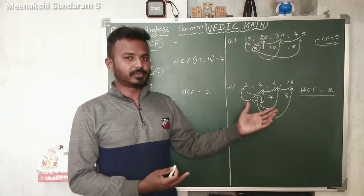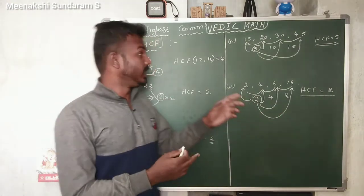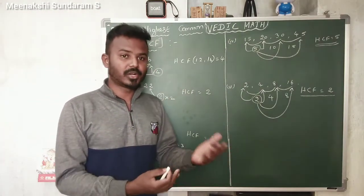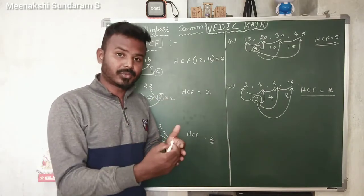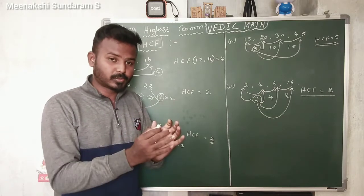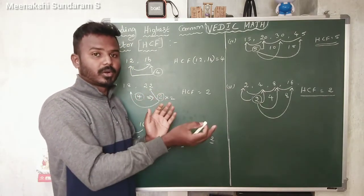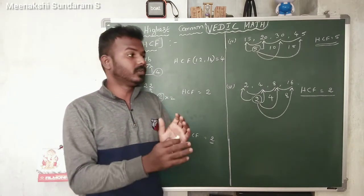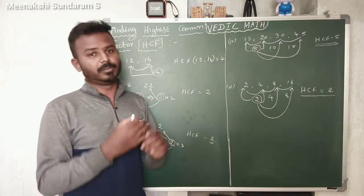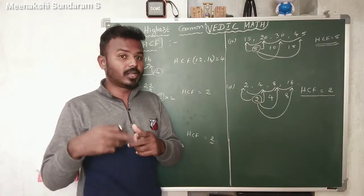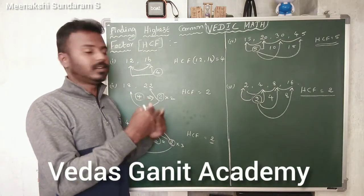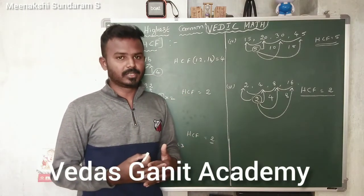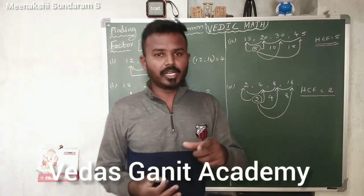So this is the method. When given any numbers to find HCF, first arrange them in ascending order. After arranging, find the difference of consecutive numbers. Take the smallest difference — if that smallest number divides all the given numbers, it is the HCF. If it does not divide all the numbers, find the factors of that difference, take the smallest factor, and check if it divides all the numbers. That factor will be the HCF. Thank you for watching. If you have any doubt, you can ask me in the comments.